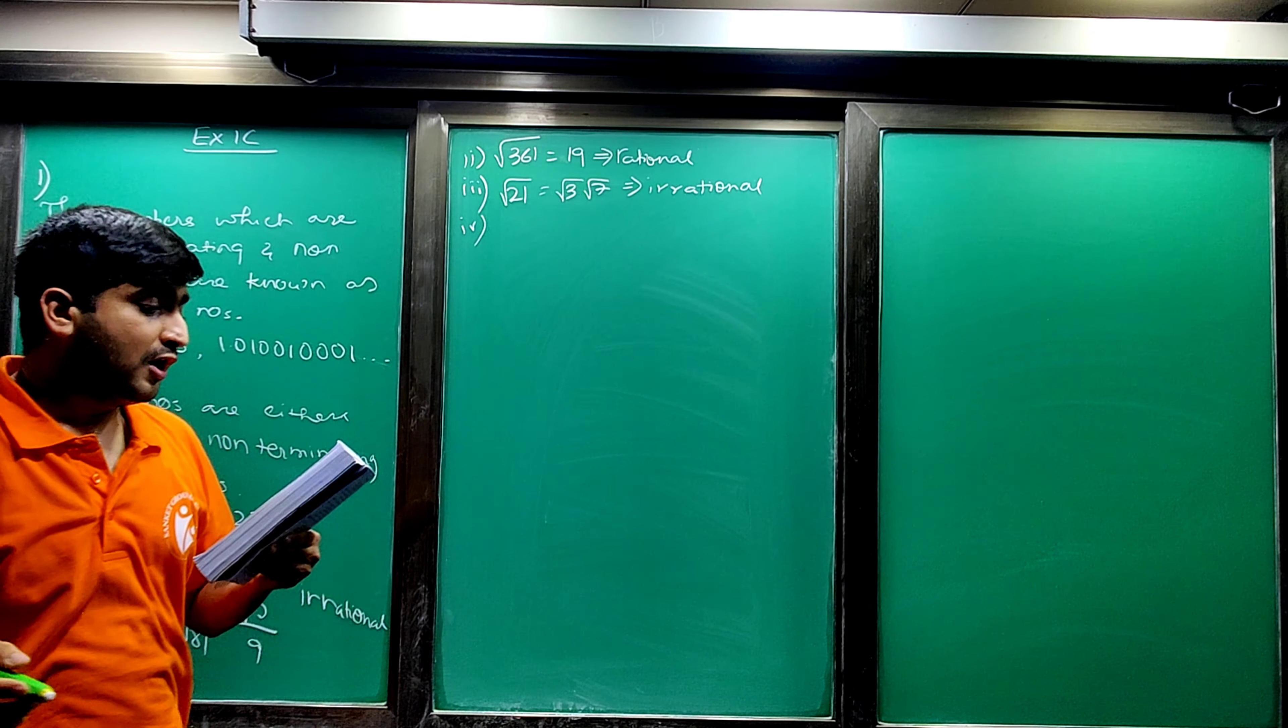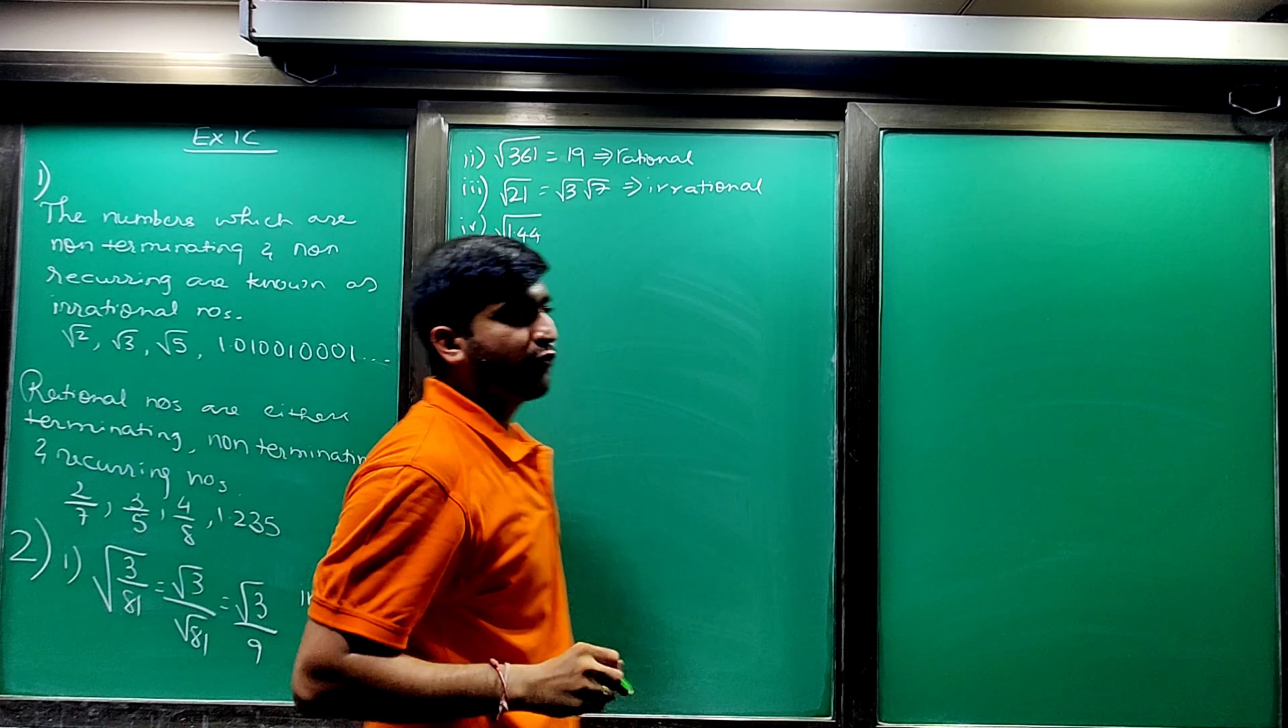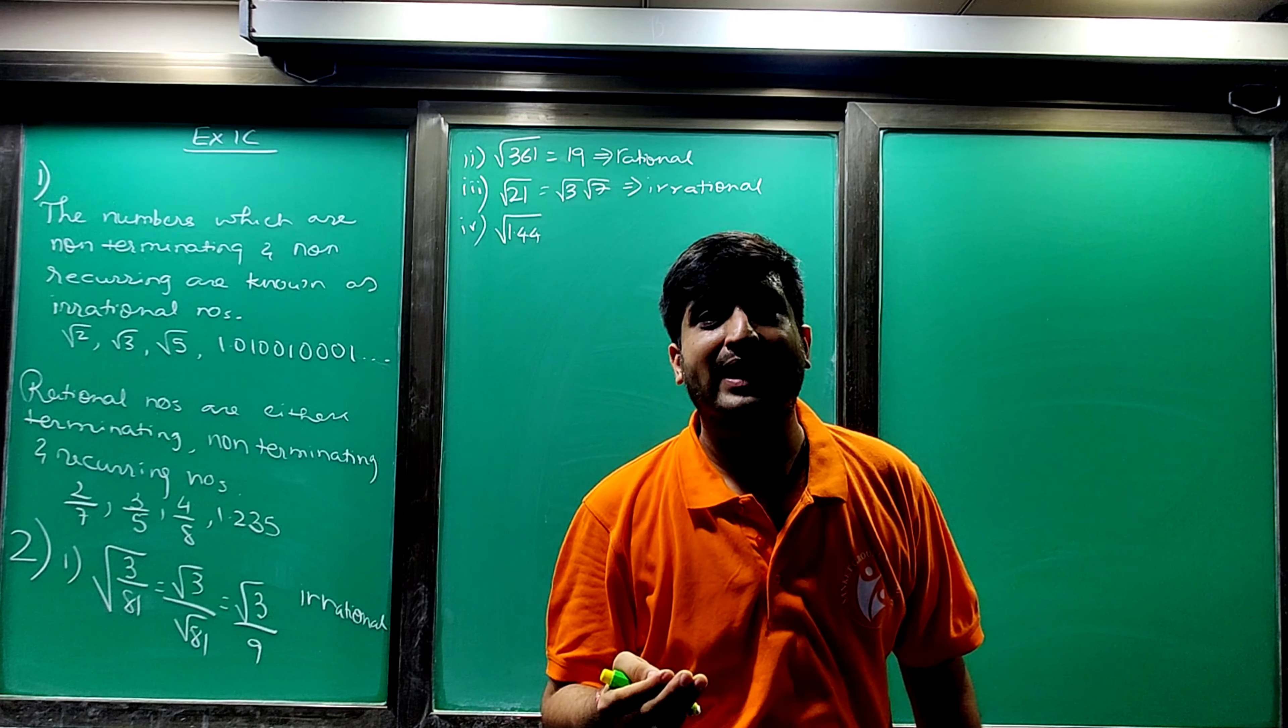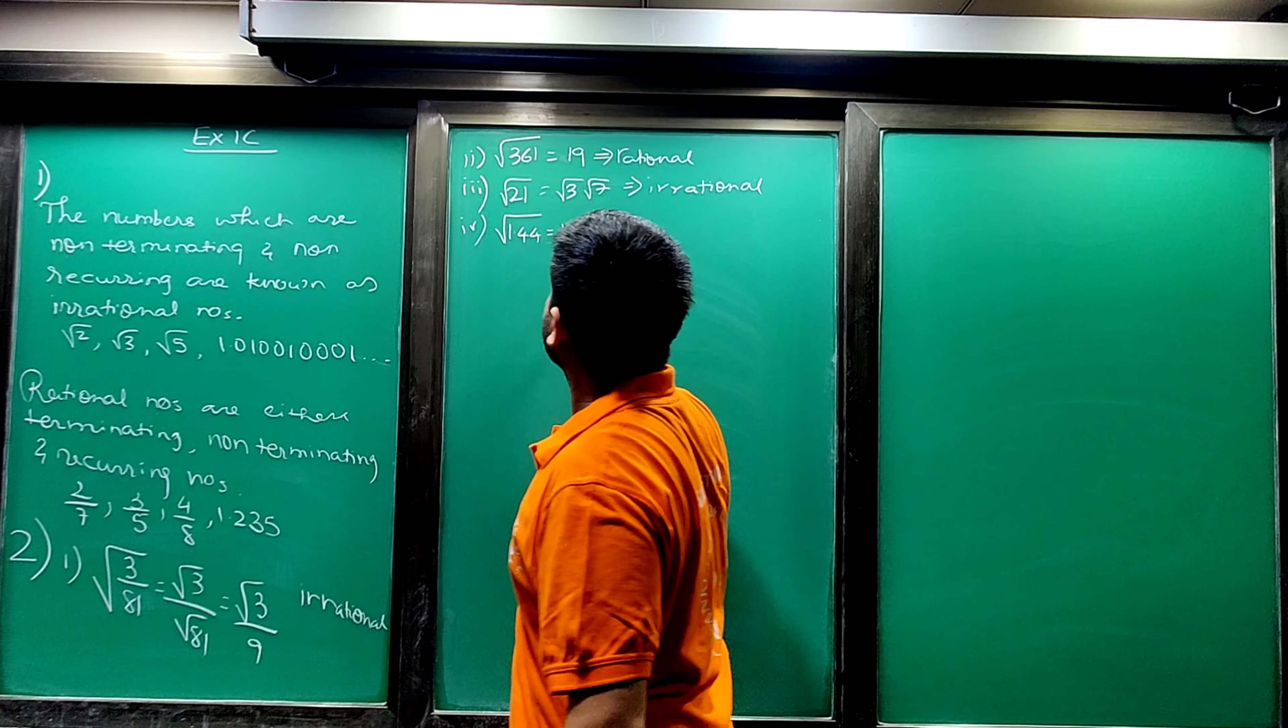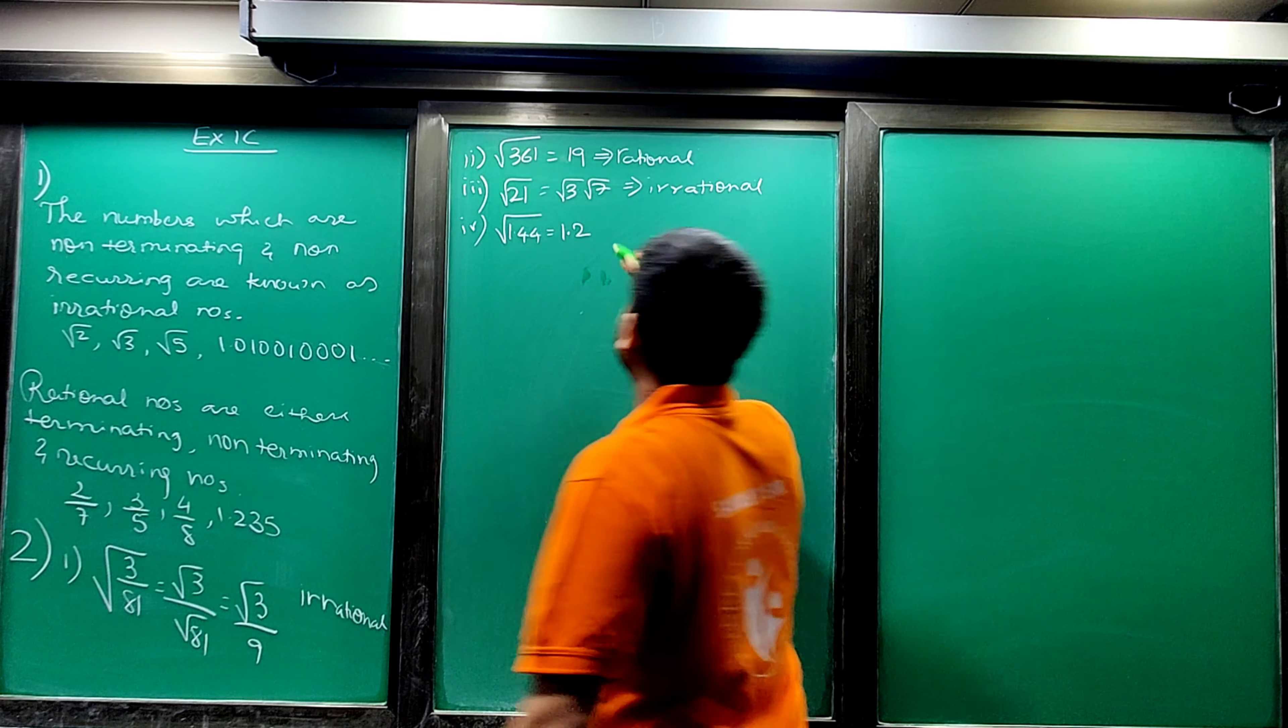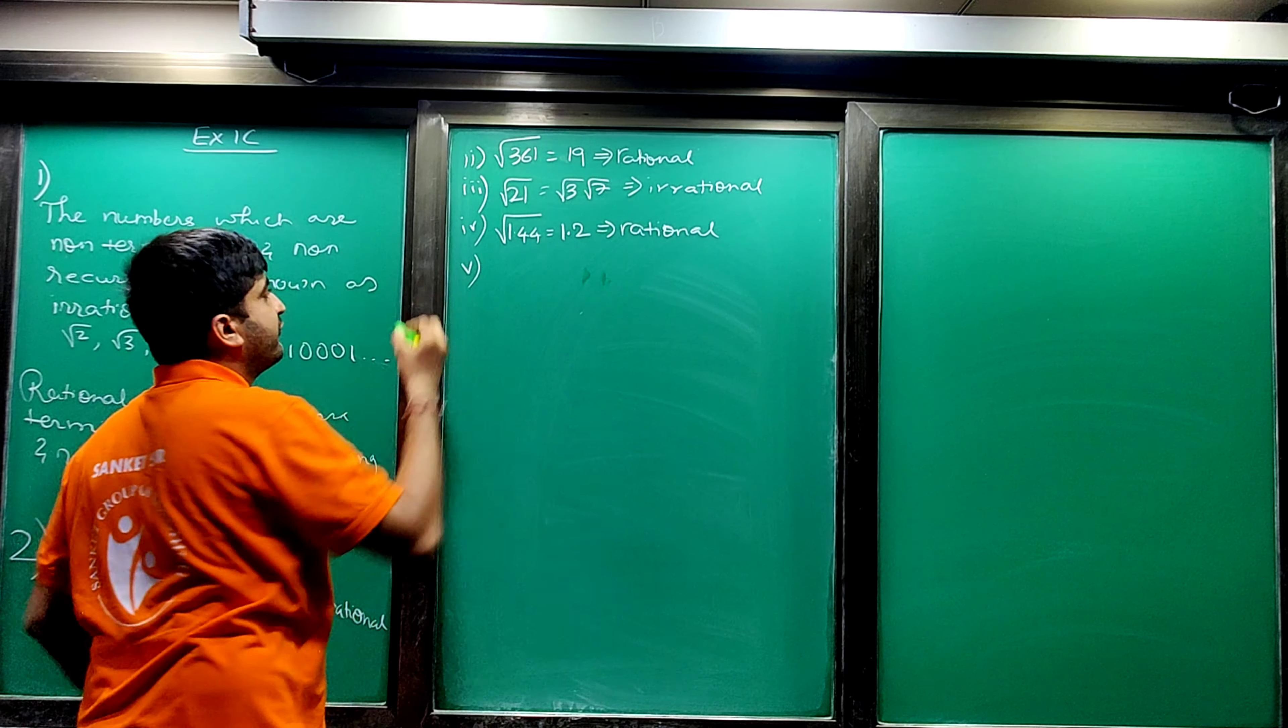Fourth: under root 1.44. If point is there, then under root 144. This is 144, which is the square of 12. So this answer is 1.2. Now if you can see, it is a terminating number. As it is a terminating number, it is your rational number.